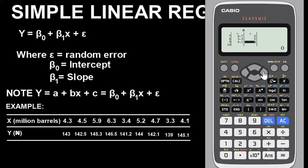Let's go over to Y values and input the respective values. Click on the down button. For Y values, we have 143, then 142.5, then 145.3, then 146.5, then 141.2, then 144, then 142.1, then 139, and lastly 145.1.